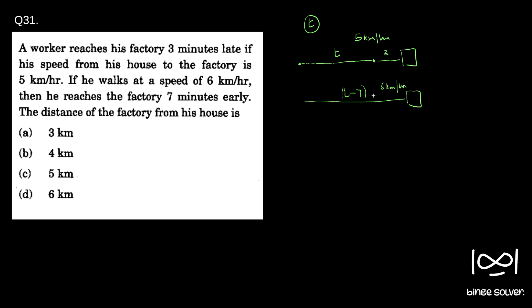We know that in both cases, the distance, which we need to find out, is the same. So we can write an equation. Speed is 5, and since it is given in hours, we will write 5 divided by 60 to get kilometers per minute. So this becomes 5 by 60 kilometers per minute.